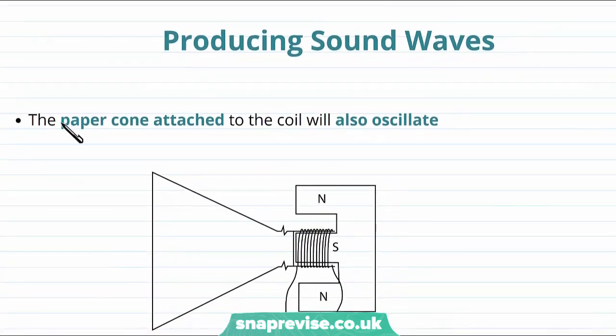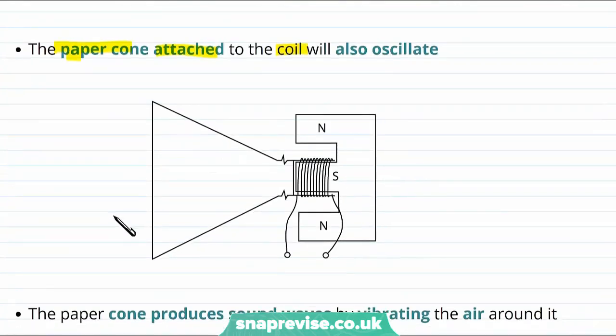So what does this mean for the paper cone? Well the paper cone is attached to the coil, and therefore this paper cone is also going to oscillate. So here is our paper cone, and it's going to move backwards and forwards whenever the coil moves backwards and forwards. So the paper cone is oscillating.